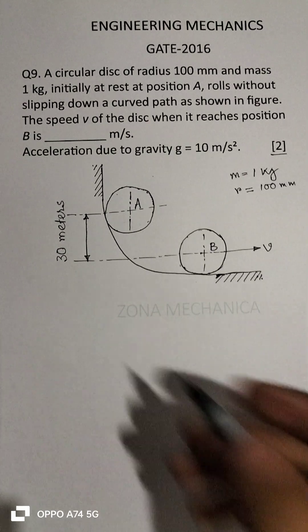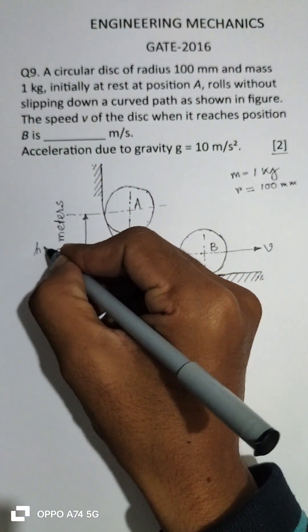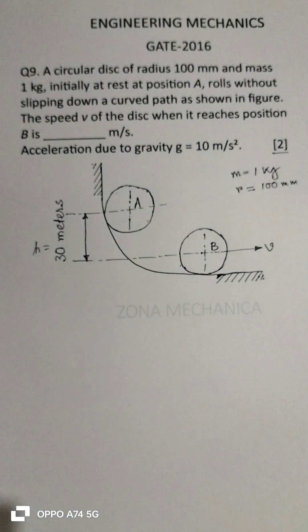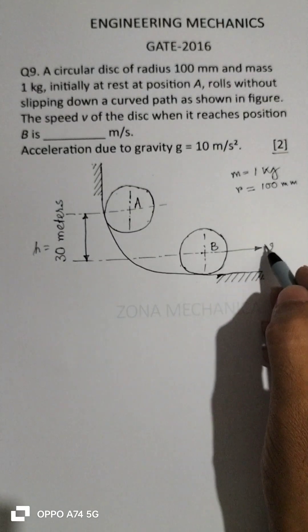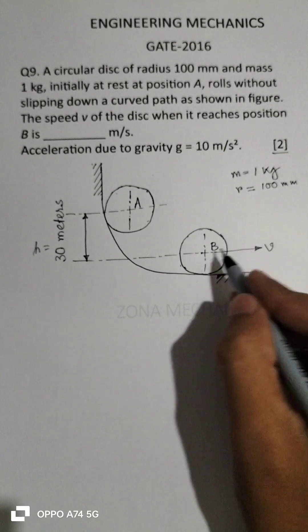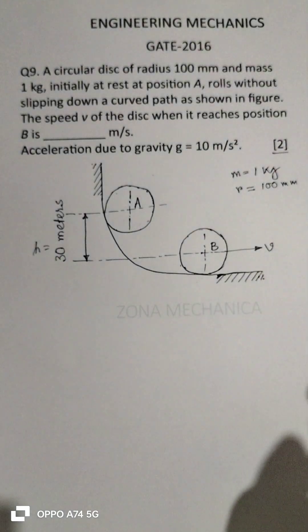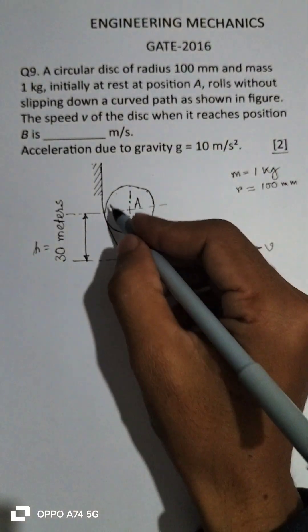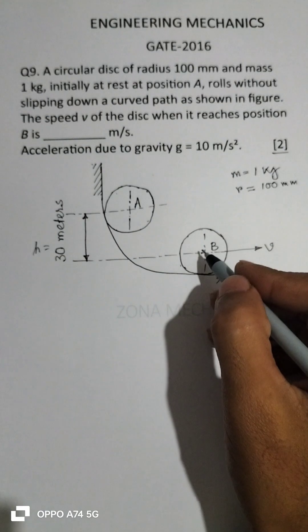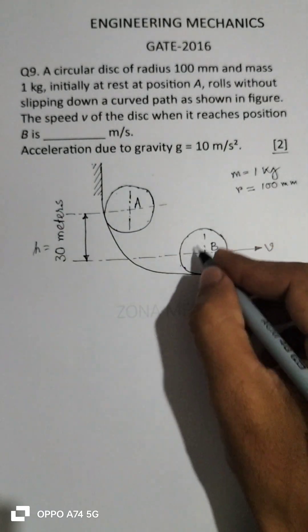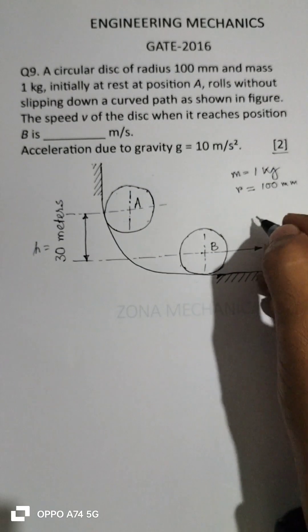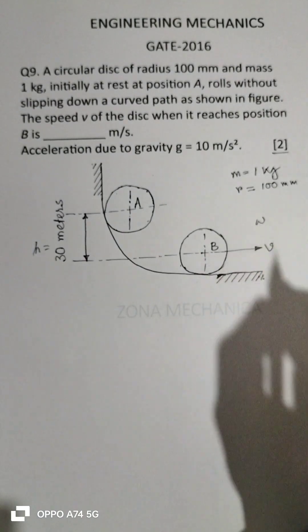Let this height be h, which is equal to 30 meters as given, and the linear velocity of the center at position B is v. Since it is rolling down this curved path, it will be having circular motion. Let omega be the angular velocity.